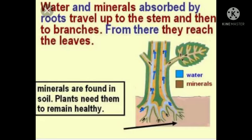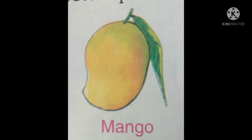As you can see in the picture, the stem supports branches, leaves, flowers, and fruits. For conduction, the blue arrows going upward show water and minerals being transported to the branches and leaves. The stem also conducts or transports the food prepared by the leaves to all parts of the plant, and it also helps in the growth of plants.